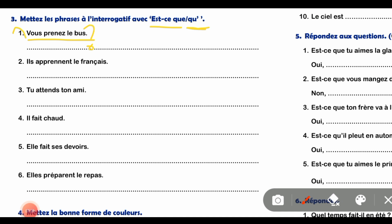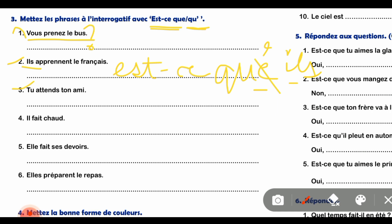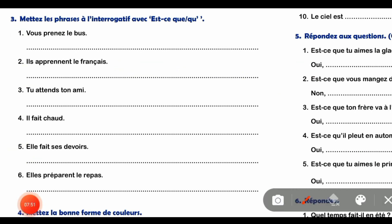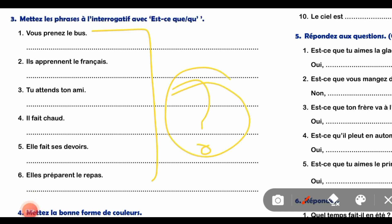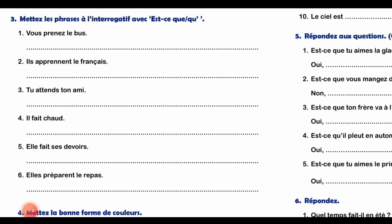यहाँ पर apostrophe वाला 'est-ce qu'' नहीं put करेंगे क्योंकि यह vowel से begin नहीं करता। दूसरे वाले case में apostrophe use करना पड़ेगा क्योंकि जब 'est-ce que' के बाद 'il' लिखेंगे तो दो vowels एक साथ आ जाएंगे, तो vowel हटाकर apostrophe put करेंगे। But remember कि last में सबके पीछे question mark जरूर insert करें।